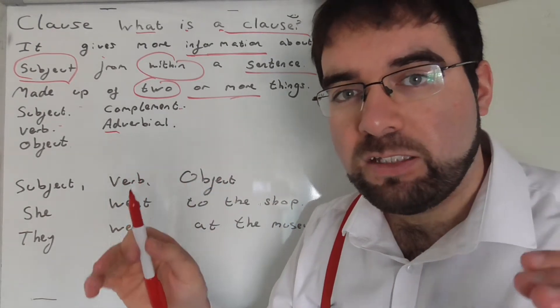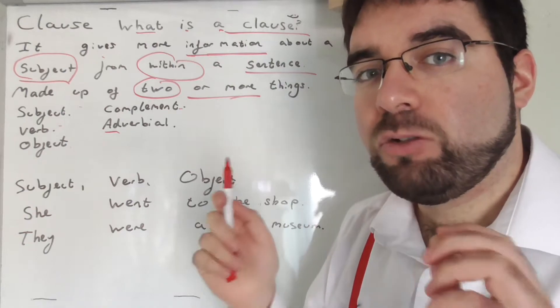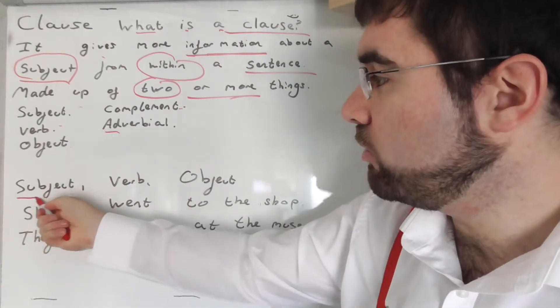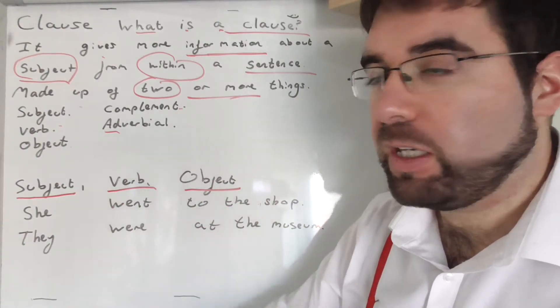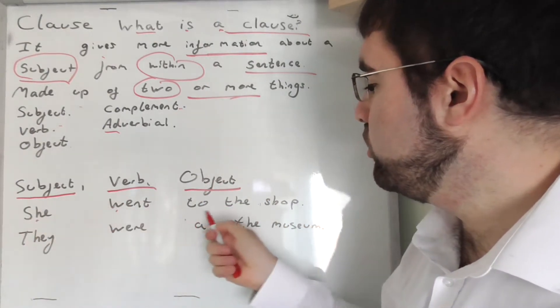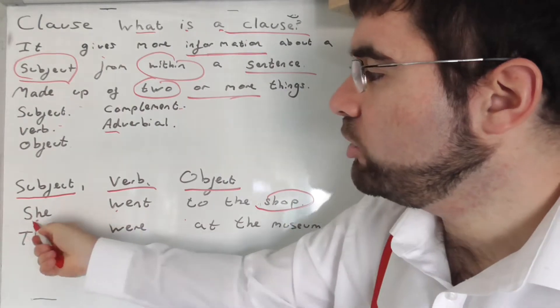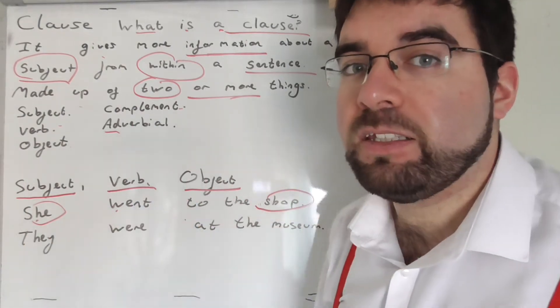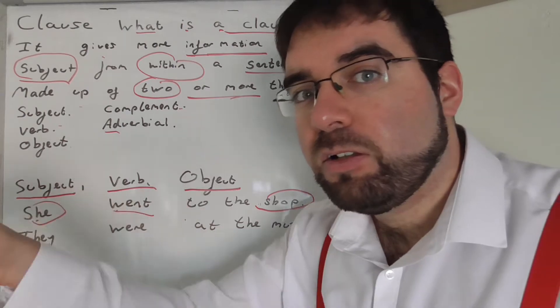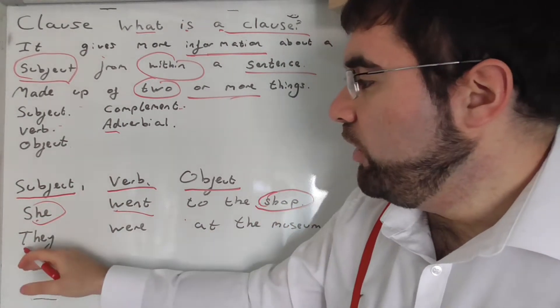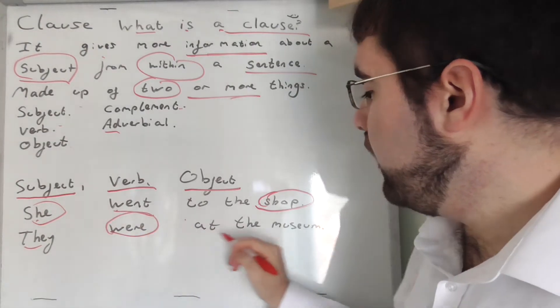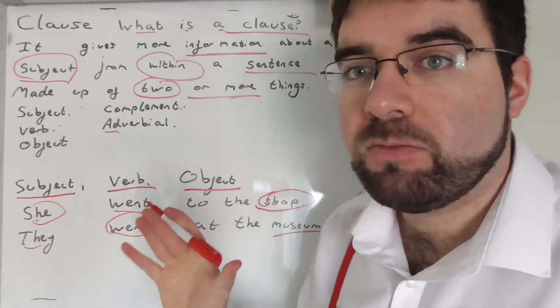So at the very least, we can create a sentence normally with three: subject, verb, object. Okay. She went to the shop. She - subject, who the sentence is about. Verb - went. To the shop. They were at the museum. Very good.